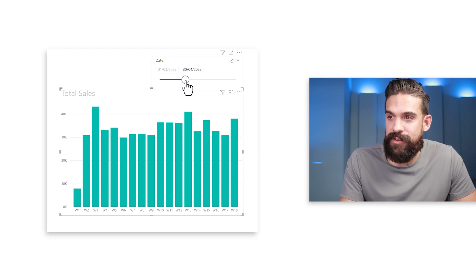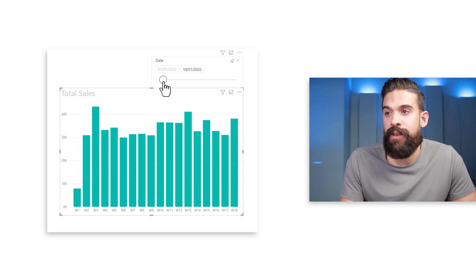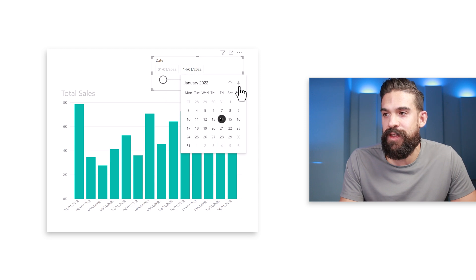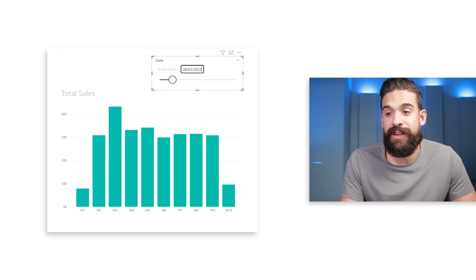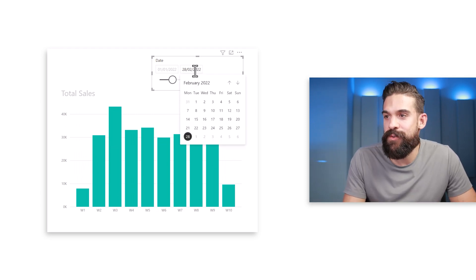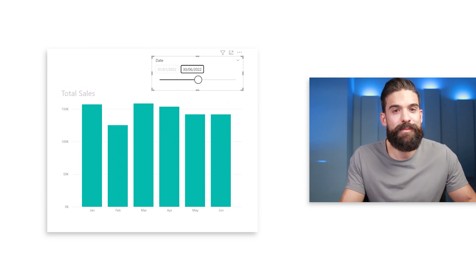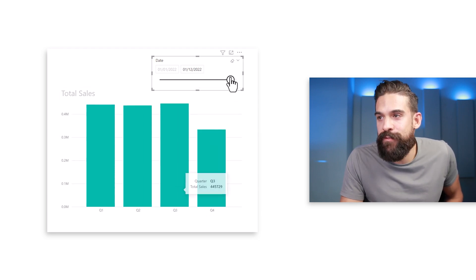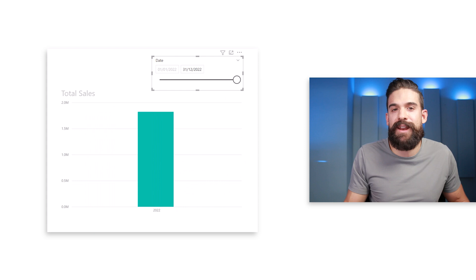Let's see it in action. Sliding all the way to the left gives only 14 days selected and we see a breakdown by dates. Changing the ending date to end of February automatically picks up weeks. Changing it to end of June should pick up months — and there it is. Sliding all the way to the right shows quarters, and with more than one year of data the breakdown would switch to years.